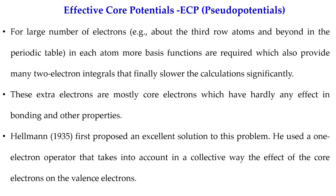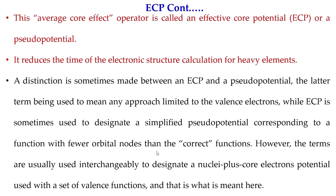His idea is to consider a one-electron operator for all core electrons combined. For example, if you have 40 core electrons, their combined effect is treated by a single operator, while valence electrons are treated explicitly. The effect of the core electrons is then added to the valence electron treatment to get the final result. This is the idea of the effective core potential — we define an operator to include the average core effect.